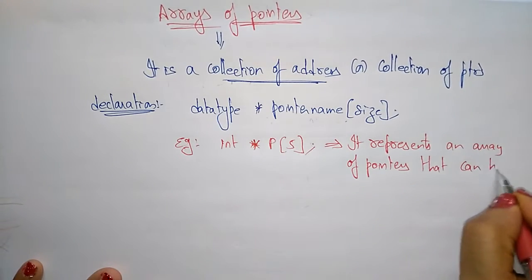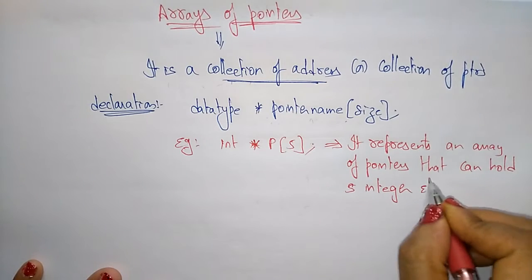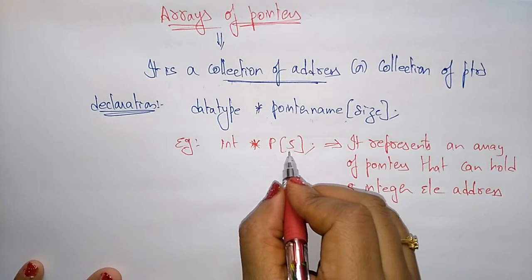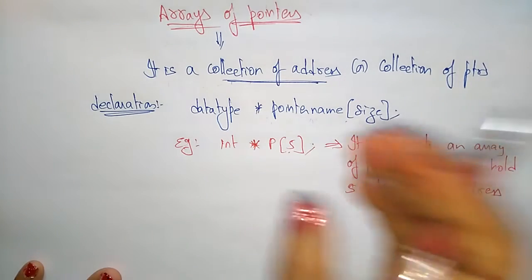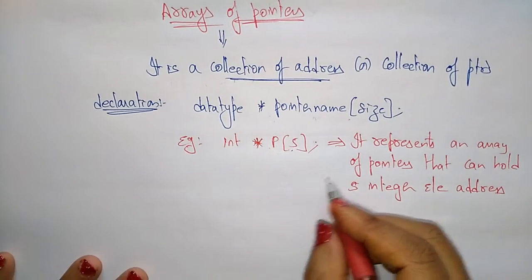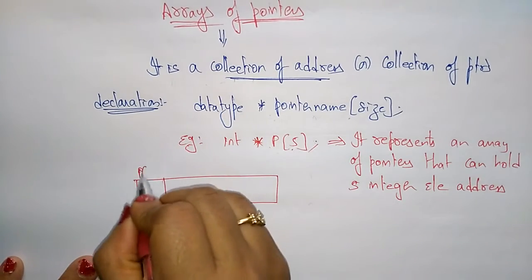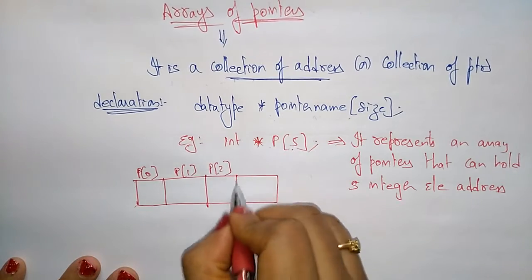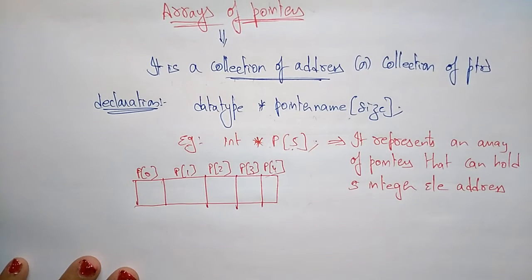For example: `int *p[5]`. This represents an array of pointers that can hold 5 integer element addresses. So here it stores the addresses of 5 integer elements — p[0], p[1], p[2], p[3], and p[4] — which each hold one of those integer element addresses.